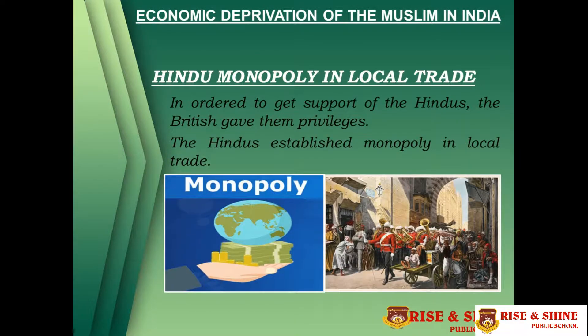Then there was Hindu monopoly in local trade. In order to get the support of the Hindus, the British gave them privileges. The Hindus established a monopoly in local trade and only promoted their own products rather than those of the Muslims.